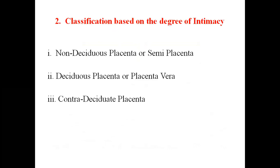The second classification is based on degree of intimacy — how close the mother's tissues and the baby's tissues are. There are three types: non-deciduate placenta, also called semi-placenta; deciduate placenta, also called placenta vera, which is the true placenta; and contra-deciduate placenta.